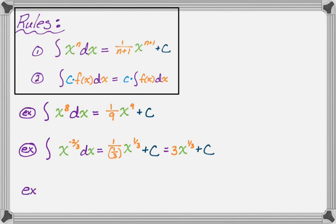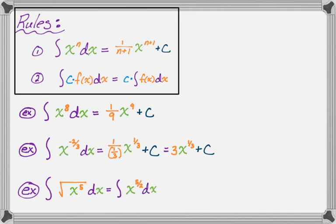Let's look at another one: the integral of the square root of x to the 5th dx. When dealing with radicals, rewrite them as rational exponents — it makes your life a lot easier. So rewrite this as the integral of x to the 5/2 dx, where the original exponent is the numerator and the radical index is the denominator. Adding 1 to 5/2 gives 7/2, so the reciprocal is 2/7, giving (2/7)x to the 7/2 plus C.